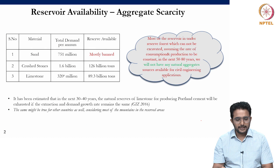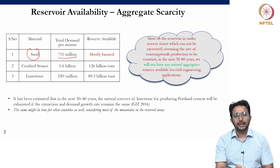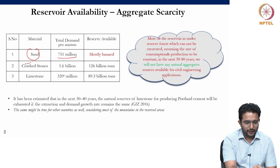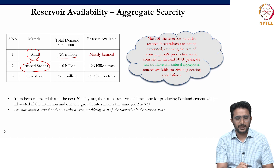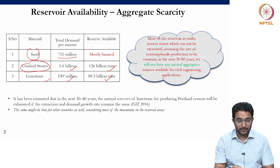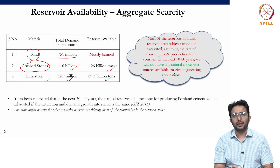This is data from India. The demand for river sand is around 751 million tons per annum. However, because of its negative effect on the environment, mining of river sand is banned in most parts of the country. The only alternative is to use manufactured sand. The demand for crushed stone — for both natural coarse and fine aggregate — is around 1.6 billion tons per annum, and we have a sufficient supply of around 126 billion tons. A similar figure can be seen for limestone, where the demand is 320 million tons per annum and the available reservoir is 89.3 billion tons. However, most of this reservoir is in restricted areas, such as reserve forests, where mining cannot be done.